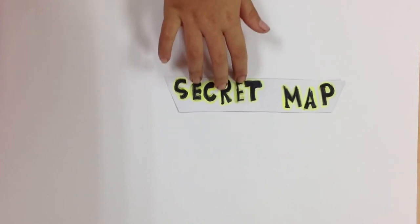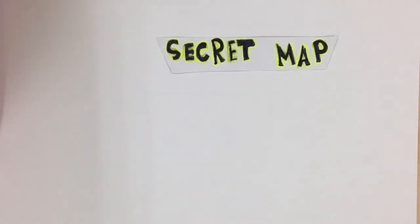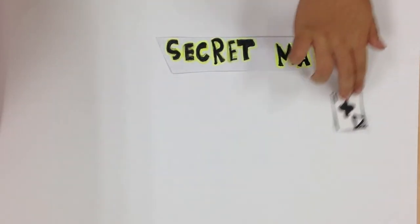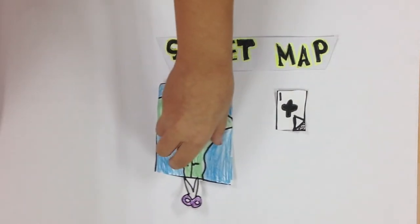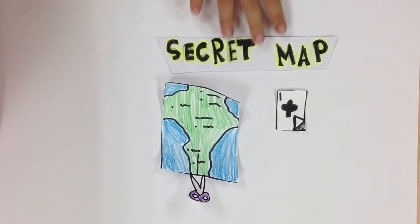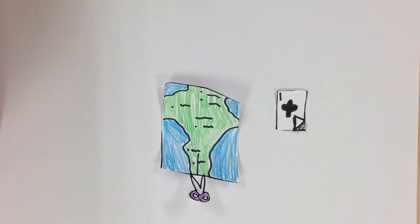Secret maps! The spy peels the two pieces of cards, then cuts the map, then they stick the map into the two pieces of cards.